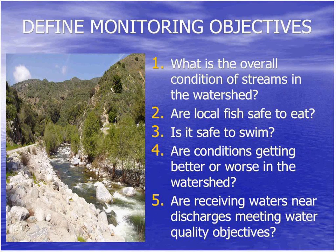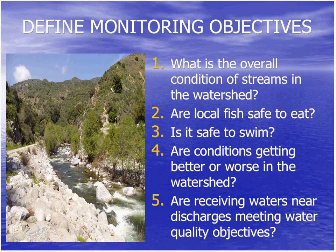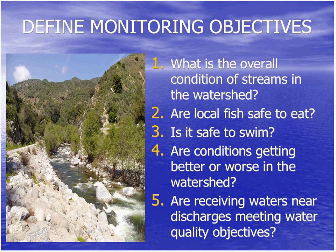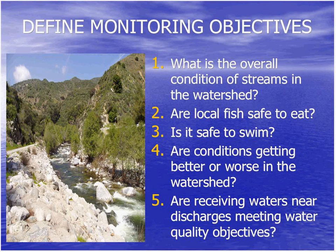With this large group, the first thing we did — and the first thing you should do when designing a monitoring program — is define your monitoring objectives: what are you trying to accomplish? This group came up with five things they thought were important: the overall condition of the streams in the watershed; is the local fish safe to eat; is it safe to swim; are conditions getting better or worse over time; and are receiving waters near NPDES discharges meeting water quality objectives.